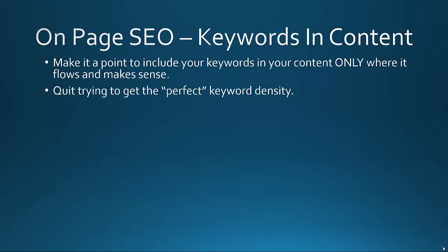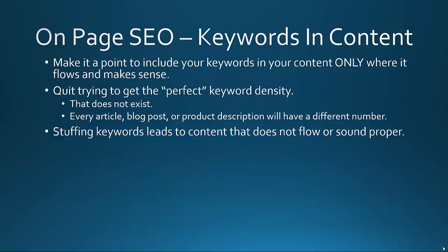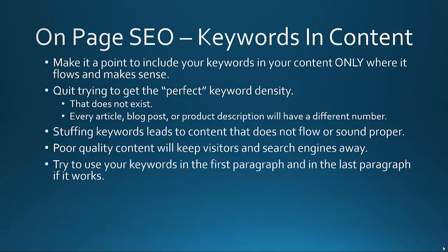The new SEO — the SEO that's going to be here to stay — is about content always being the key. Even if everything changes, content has always been there since the start of the search engines, and it's going to remain king. Incorporating your keywords into your content is important, but only where it makes sense, and there's no perfect number of keywords — every article, blog post, or product description will have a different number. Stuffing keywords leads to content that doesn't flow or sound proper, and poor quality content will keep visitors and search engines away. Try to use your keywords in the first paragraph and the last paragraph if it works, since search engine spider bots read top to bottom, left to right.